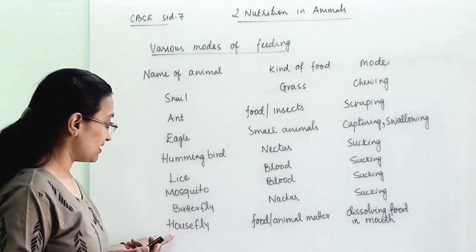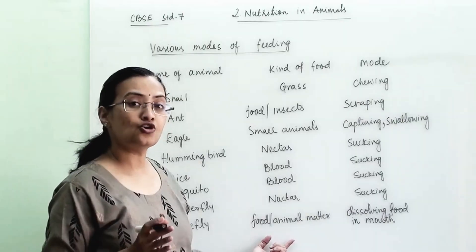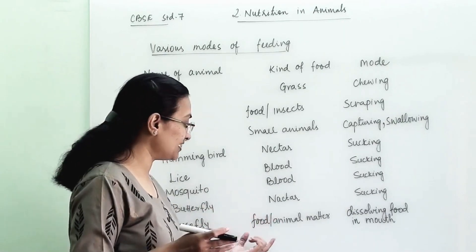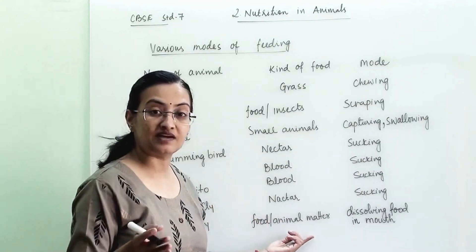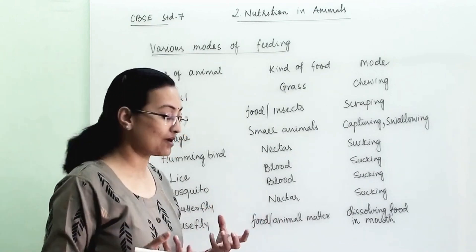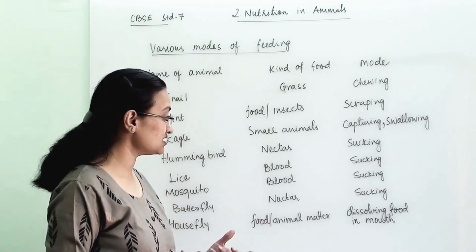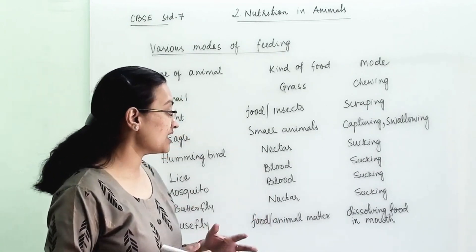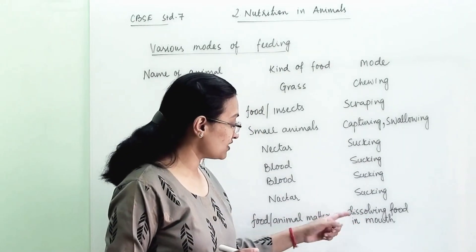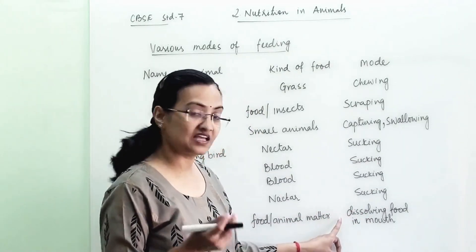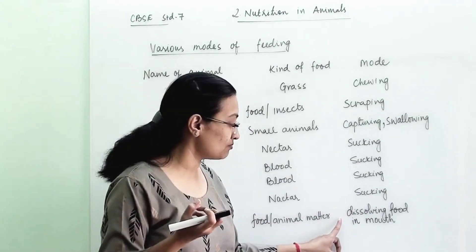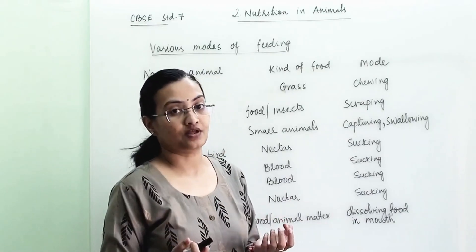Then comes housefly. The food of a housefly is various types of food — food particles, animal matter, fish, garbage, scrap — everything the fly can eat. The mode of feeding for the housefly is: first they dissolve the food in the mouth and then they swallow it.